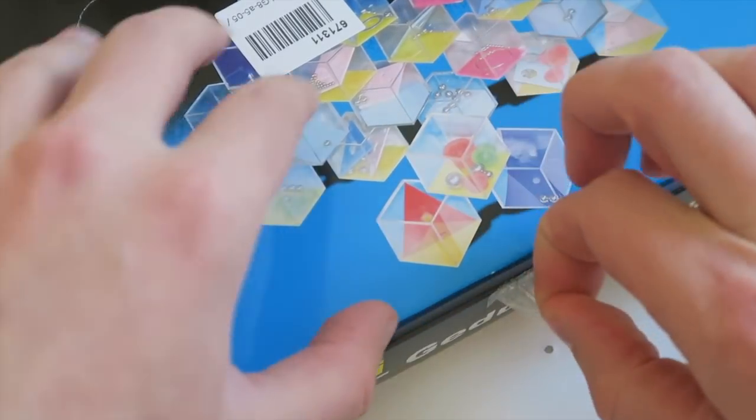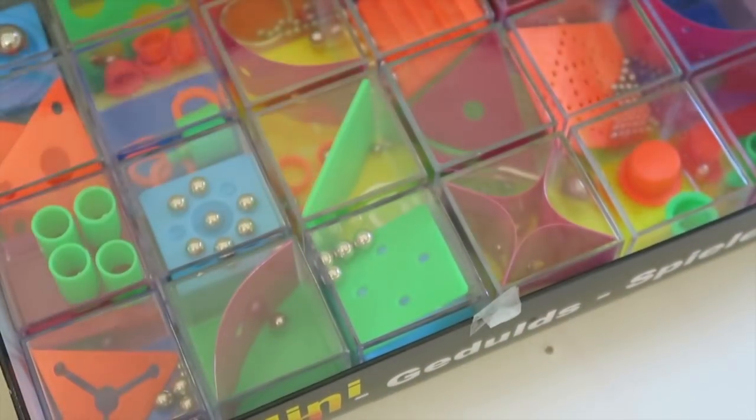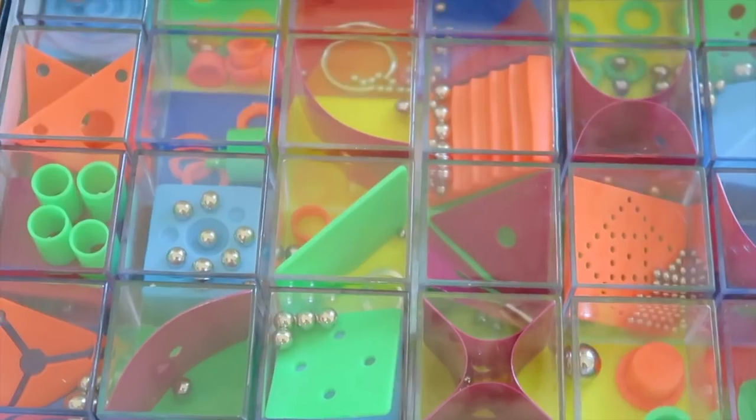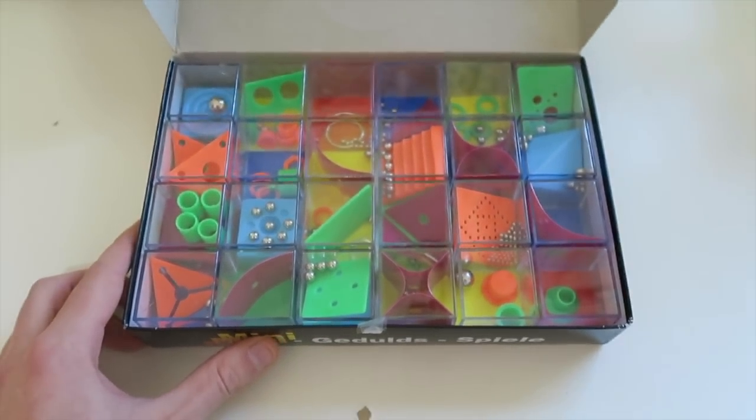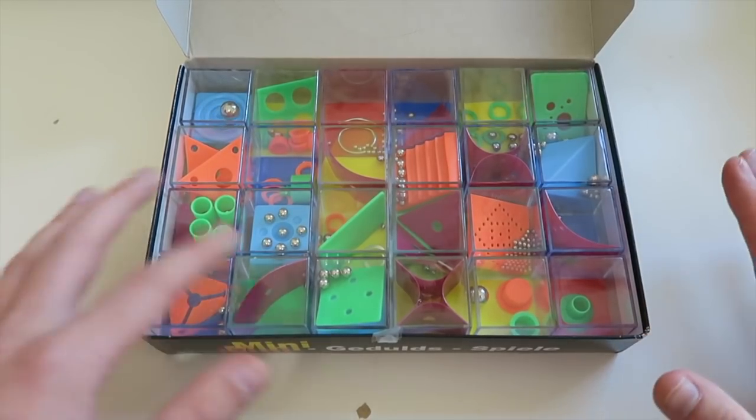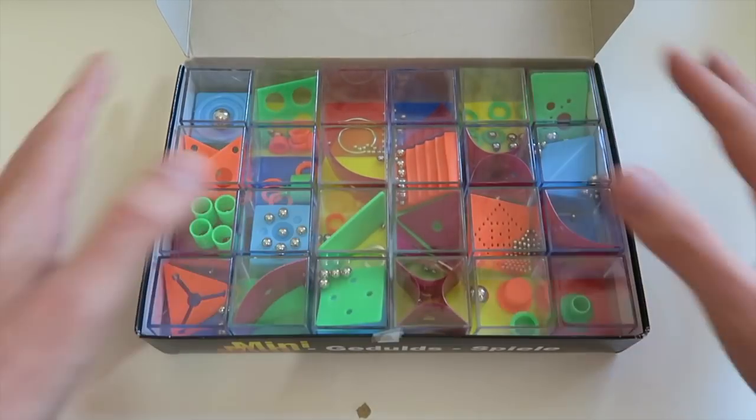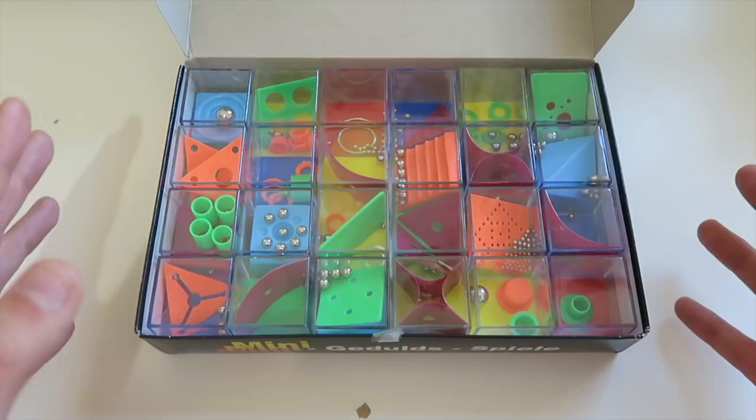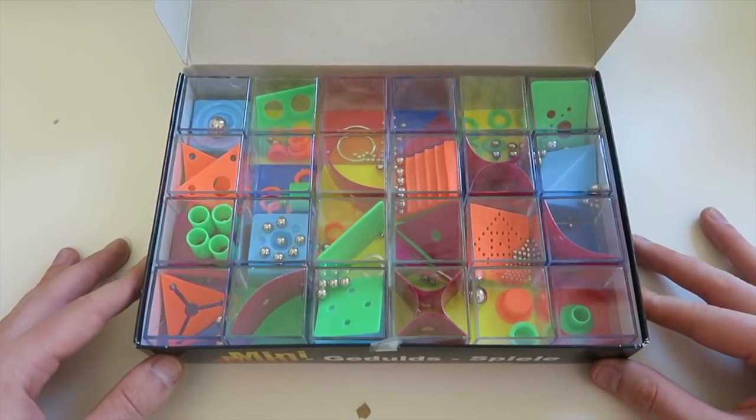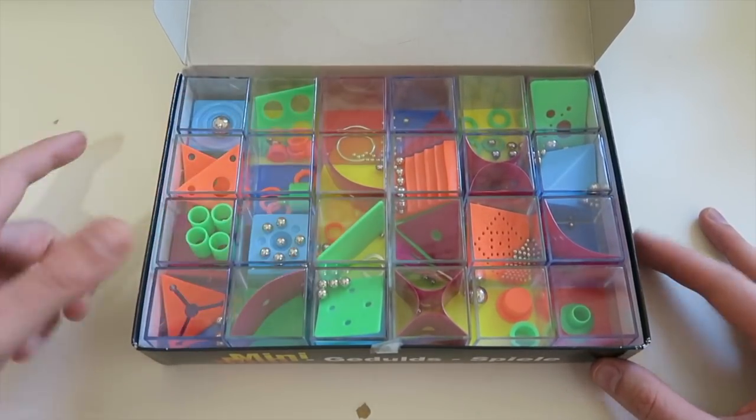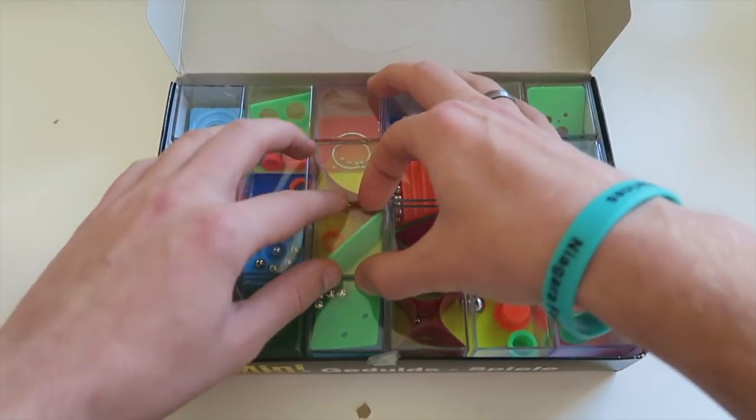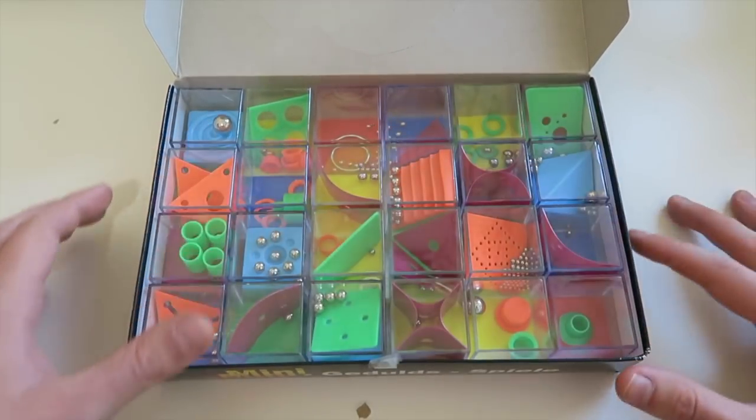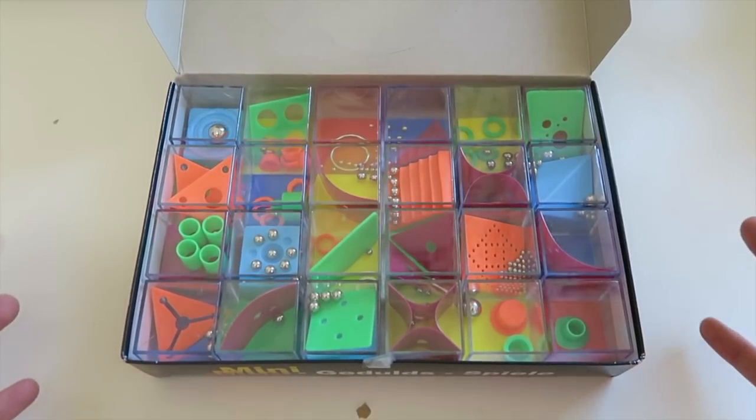So I'm not entirely sure what I've been sent here. Oh wow. Oh. Wow. That is cool. So I wasn't entirely sure what I was being sent when I was offered this selection of things, but it looks like we have four by six, 24 different separate squares. Yeah. So 24 little mazes, I guess.